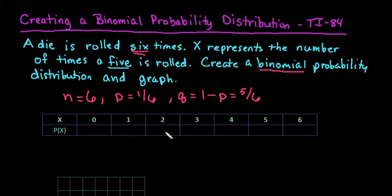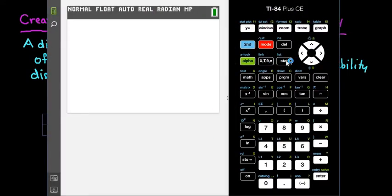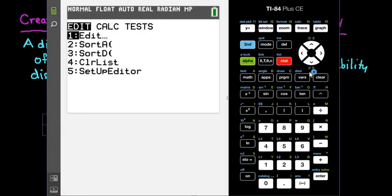So we're going to look at the probabilities of all of those. And like I said, I'm going to use the TI-84 to help me do that. So let me grab my calculator. And what we're going to do is go to stat and edit.